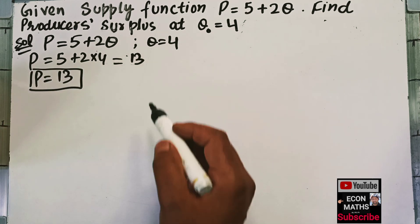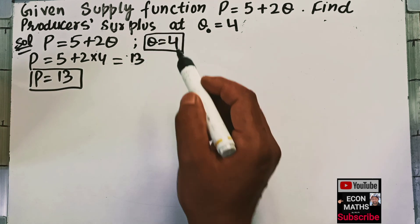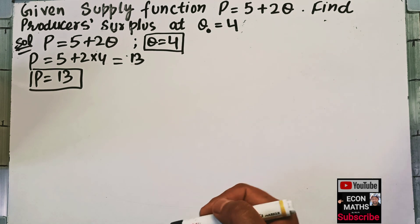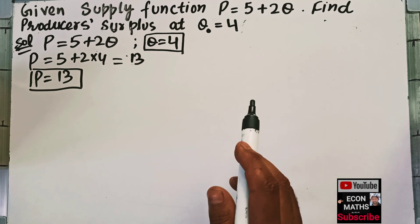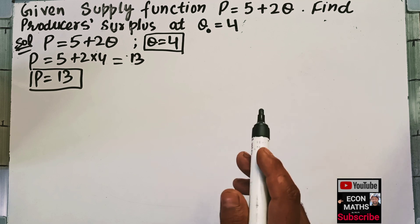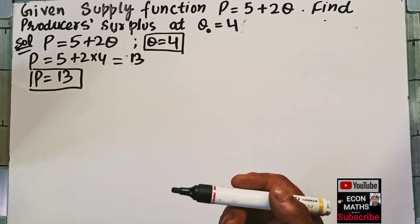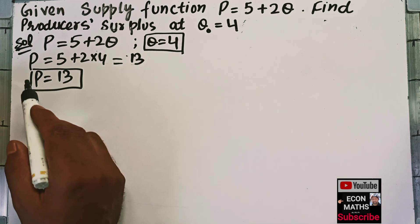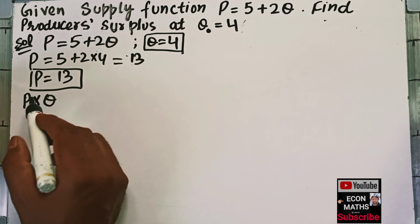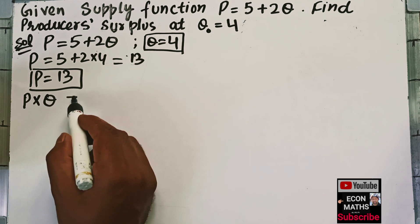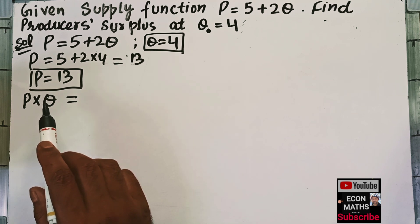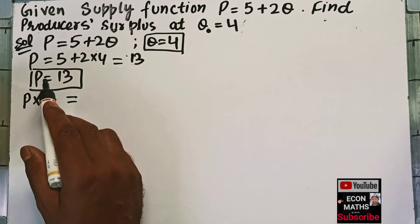So the equilibrium price is 13 and the equilibrium quantity is 4. Producer surplus is the difference between the price actually paid and the price producers are willing to get paid. Now, P × Q is the price that the producers are actually paid.